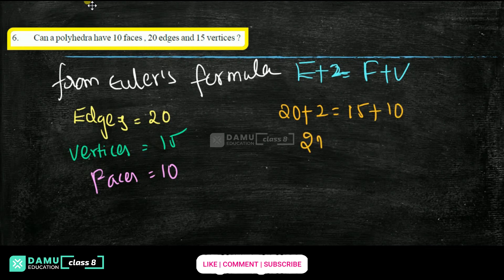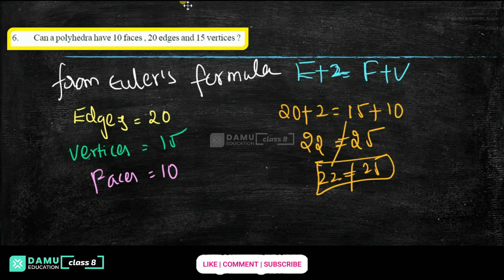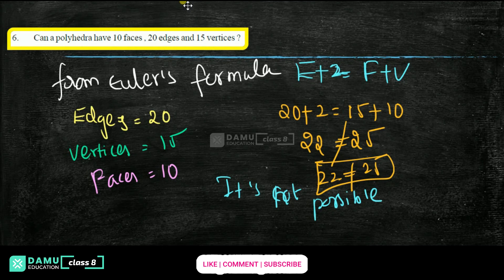That gives 22, which is not equal to 25. So it is not possible. A polyhedron with 10 faces, 20 edges, and 15 vertices cannot exist. However, if it had 23 edges, then 23 + 2 = 25, which would satisfy Euler's formula and make it possible.